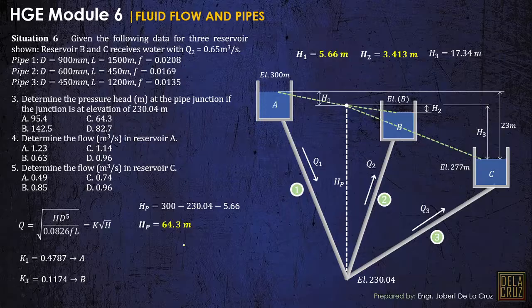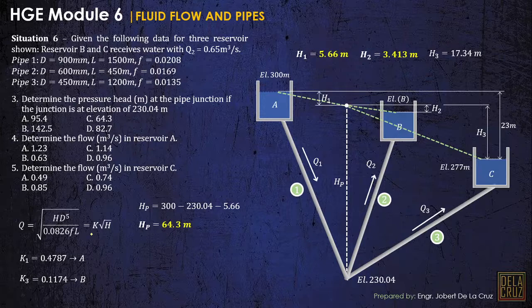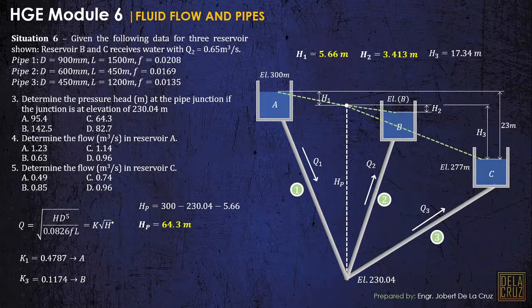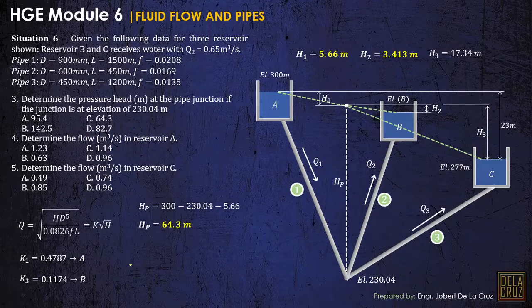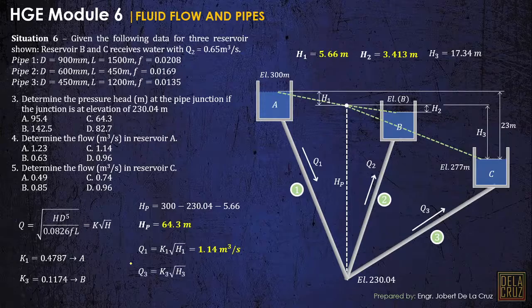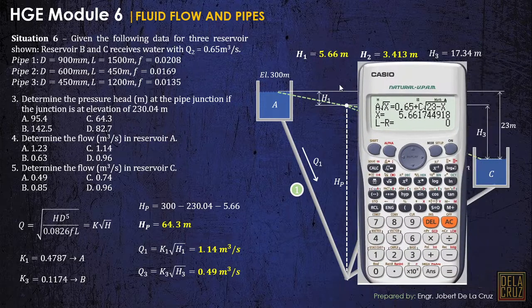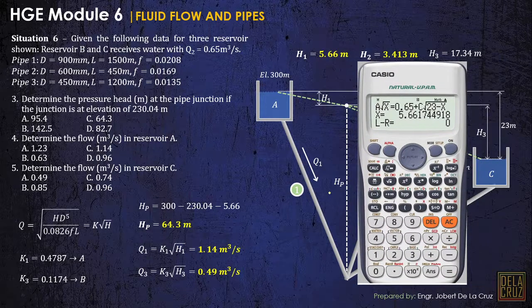Now determine the flow in reservoir A. So 4 and 5 are very easy, reservoir A and reservoir C. So using this, K square root of H, we simplify the value of the discharge by K square root of H. Now we have the H for corresponding H1 and H3. So we can have Q1 and Q3. Very, very easy.